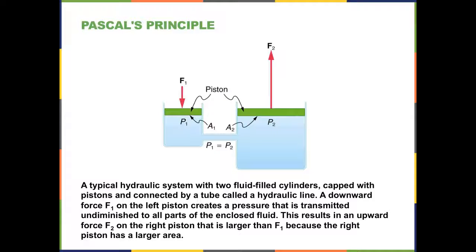So this is a hydraulic system, and it is two fluid-filled cylinders, both of which are capped by pistons that can move. And it's filled by a fluid, and they're connected to each other by what's known as a hydraulic line. If you make a downward force of F1 on the left piston, this creates a pressure that's undiminished in any way transmitted throughout all the fluid, throughout all its parts. This results in an upward force on the second piston, and because the area of the second piston is larger, the force is also larger.